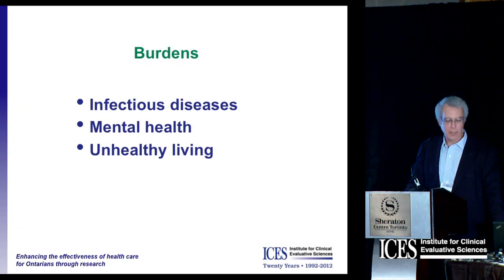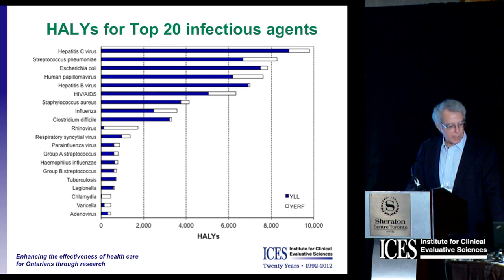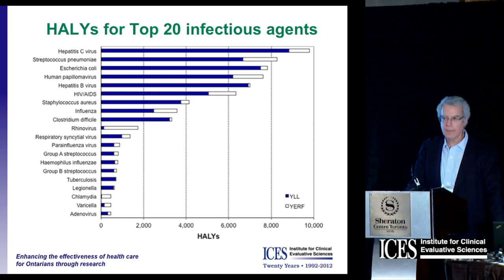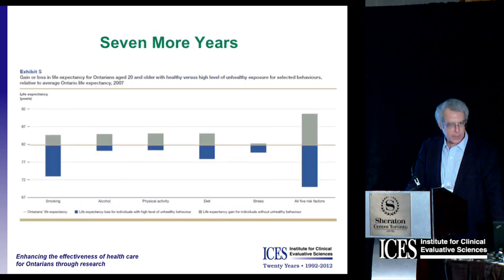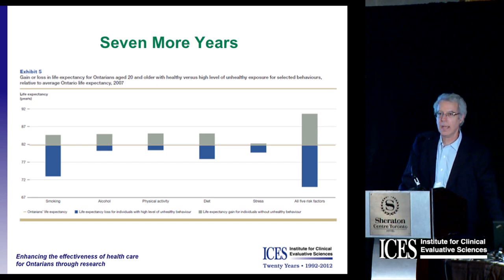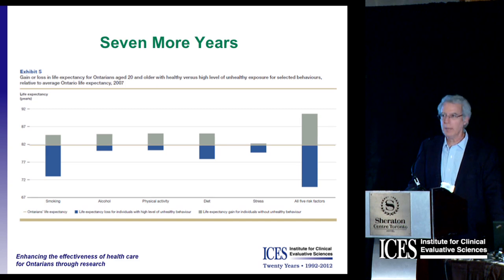We've had three major studies around burden of infectious diseases, mental health, and unhealthy living. Jeff Klong and colleagues, in conjunction with Public Health Ontario, conducted an important study called OMBOIDS looking at the top 20 infectious agents. They found that things like hepatitis C, being so chronic, have very high burden of illness. This is also the pioneering work of Doug Manuel and colleagues — an online life expectancy calculator that has been hit thousands, maybe tens of thousands of times, where you can find out things like whether you drink enough alcohol.